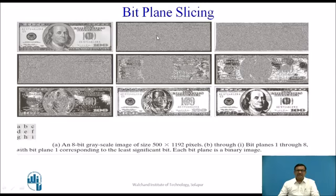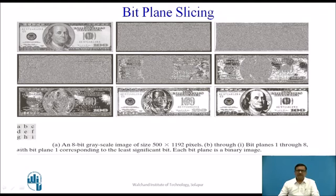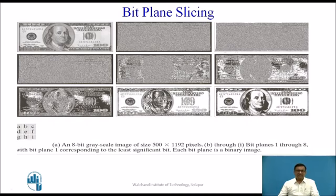As we increase the bit position — bit 0, bit 1, bit 2, bit 3, bit 4, bit 5 — we progressively get more of the input image detail. We can represent the input image using different bit planes. We can also combine planes; for example, combining bits 2 and 3 together gives a more visually appealing image because it contains more information, resulting in a better quality reconstructed image.